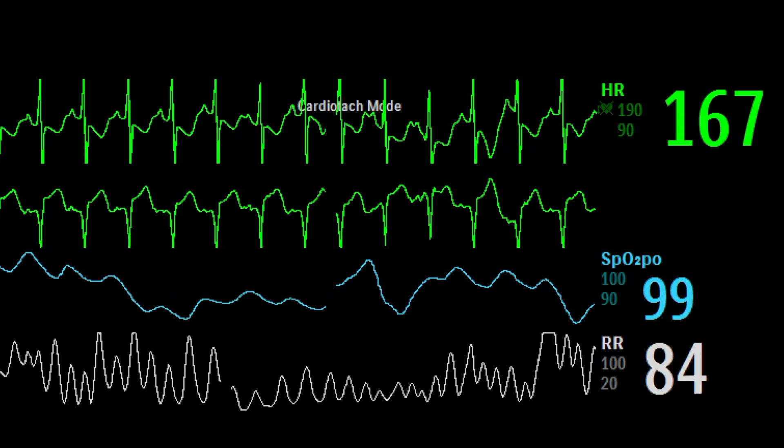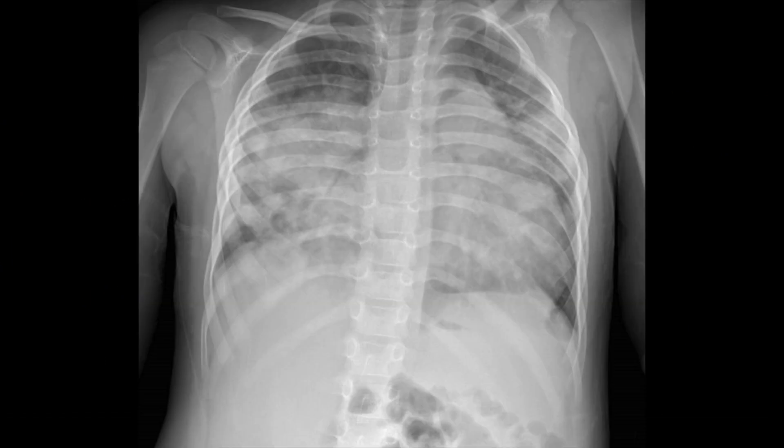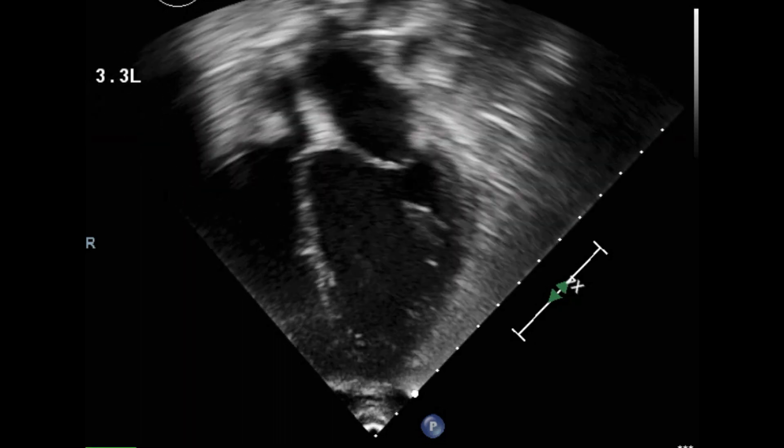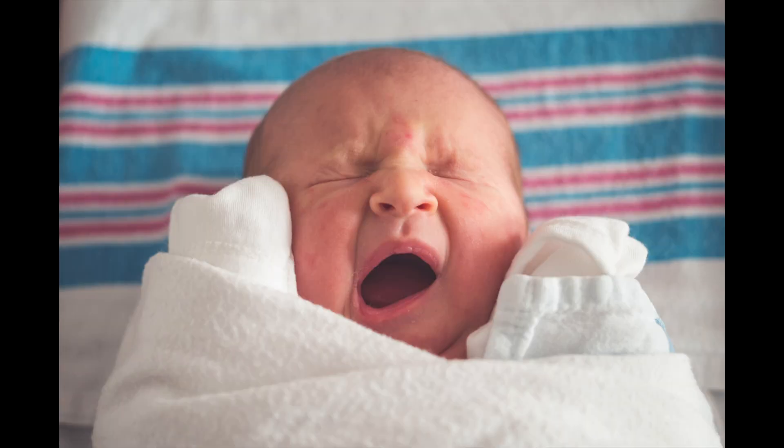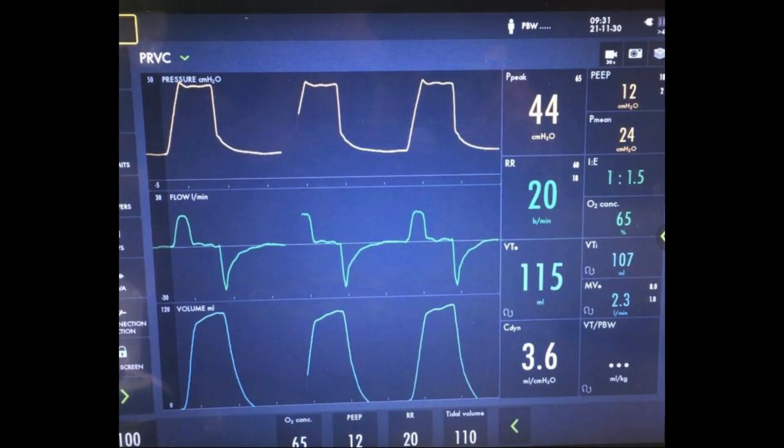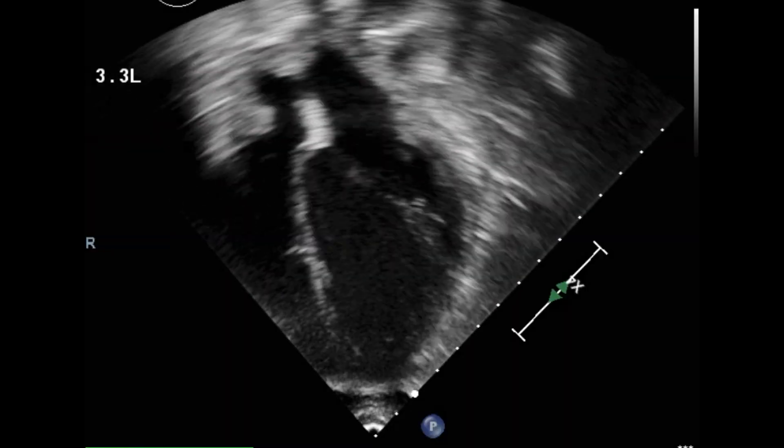You're in the pediatric cardiac ICU, and a patient needs to be intubated, but their heart looks like this. How is going from spontaneous negative pressure breathing to positive pressure ventilation going to affect this heart, or any heart for that matter?